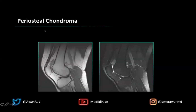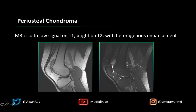Looking at the images again, the cortex is nice and thick and straight, but as we get to the lesion it becomes thin and saucerized, ill-defined, with an undulating contour — very visible on the T2. No surrounding bone marrow edema. On MRI, periosteal chondroma is typically iso-intense to low signal compared to muscle on T1 — in this case slightly brighter — and heterogeneously bright on T2, as chondroid tumors often are. There's often heterogeneous enhancement on post-contrast imaging.